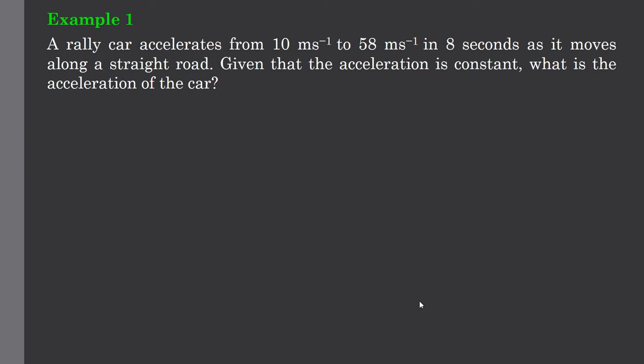So example number one. A rally car accelerates from 10 meters per second to 58 meters per second in eight seconds as it moves along a straight road. Given that the acceleration is constant, there's the key to this problem. What is the acceleration of the car?